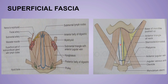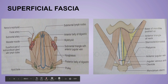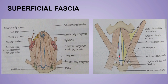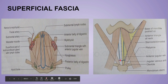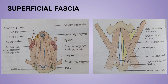The anterior jugular vein descends downward and about 2.5 centimeters above the sternum it connects with the fellow anterior jugular vein of the opposite side via a transverse channel, forming the jugular venous arch. This vein then passes laterally deep under the sternocleidomastoid muscle and ends in the external jugular vein at the posterior border of the SCM.